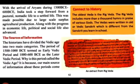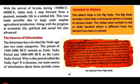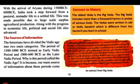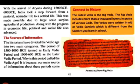Let's proceed with the arrival of Aryans during 1500 BCE to 600 BCE. India took a step forward from a pastoral nomadic life to a settled life. Aryan ke agaman ke saath, 1500 isa purv se lekar 600 isa purv tak, Bharat ne ek kadam aage badhaya - pastoral nomadic life se settled life ki taraf.